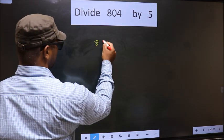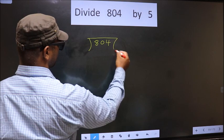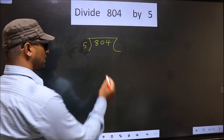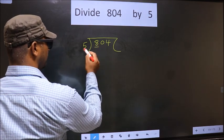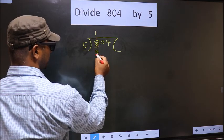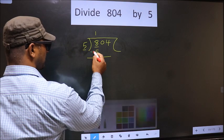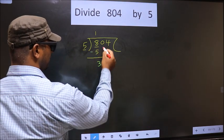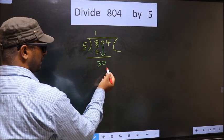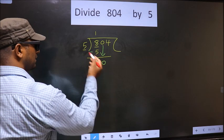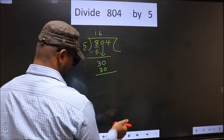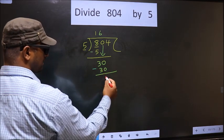That is 804, 5 here. Now here we have 8, here 5. A number close to 8 in the 5 table is 5×1=5. Now you subtract 8 minus 5 is 3. Now you bring down the beside number, so 0 down. Now here we have 30, here 5. When do we get 30 in the 5 table? 5×6 is 30. Now you subtract: 30 minus 30 is 0.